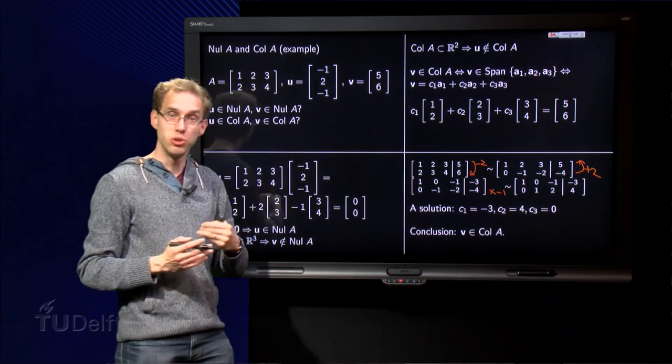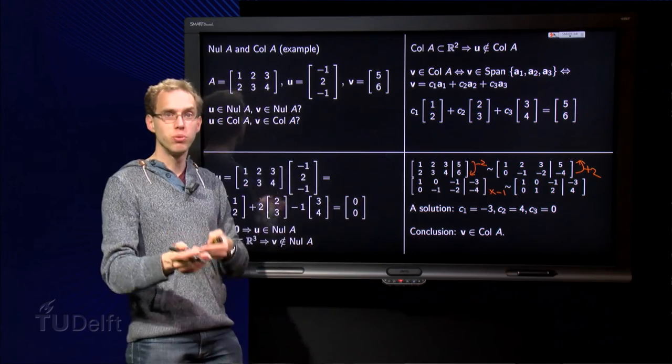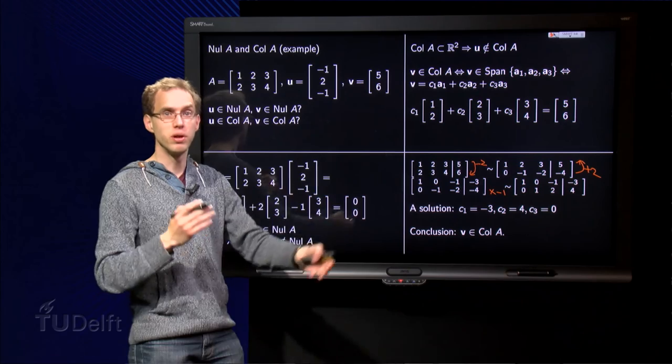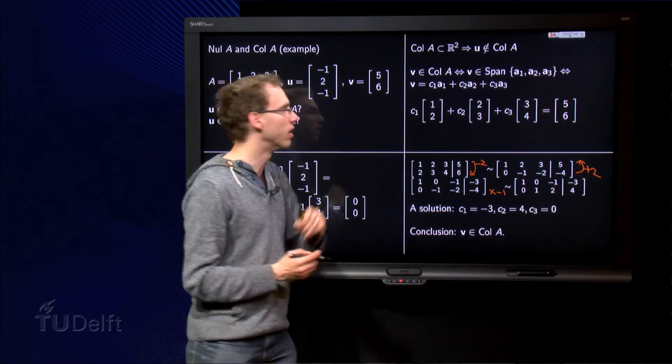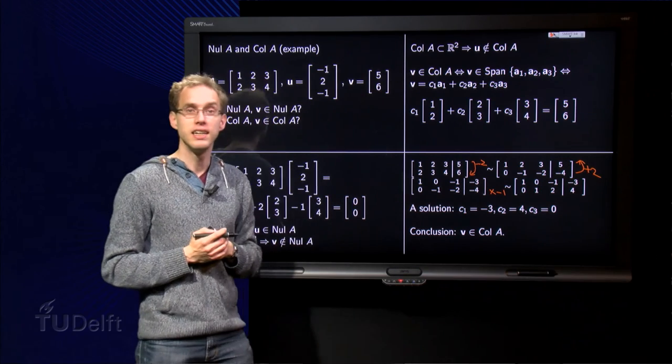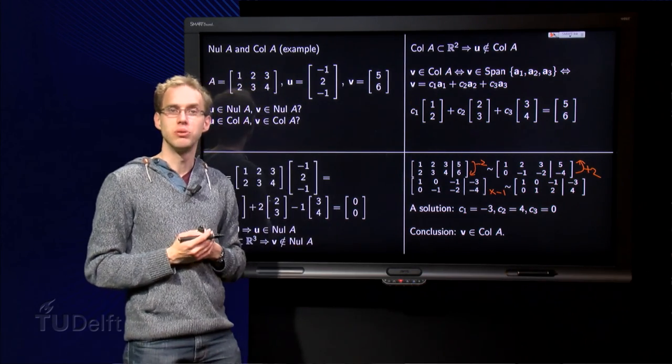Plug them in over here, just to check, such that v is a combination of A1, A2 and A3. That means that v is in the span of A1, A2 and A3. That means that v is in the column space of A. So this v is in the column space of A.